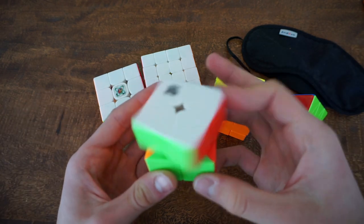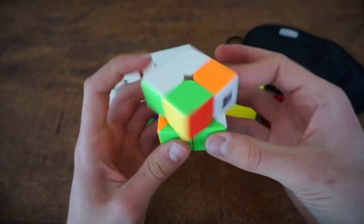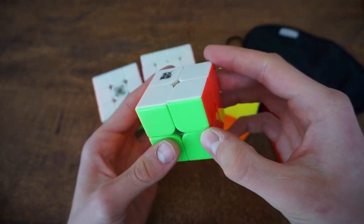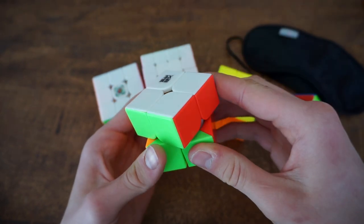Okay, so for 2x2 I'm going to use the Moyu Vapo and my goal is to get a sub-4.2 average, which would be nice.